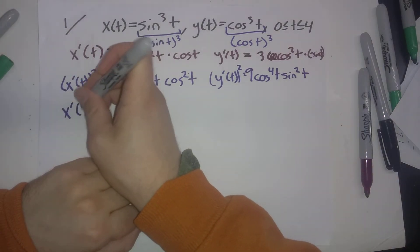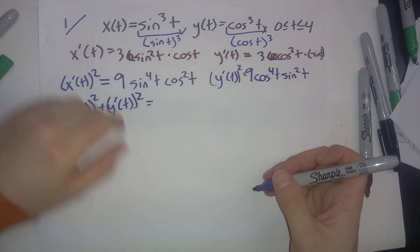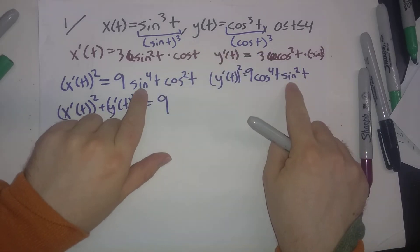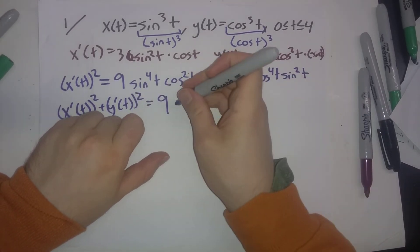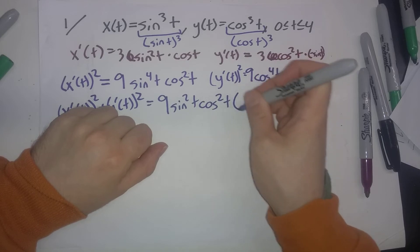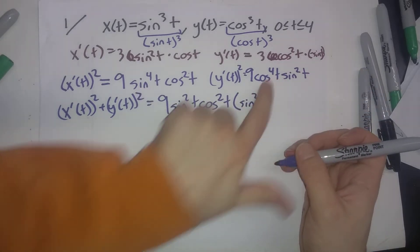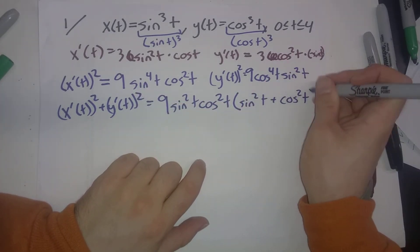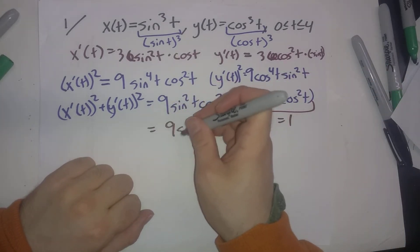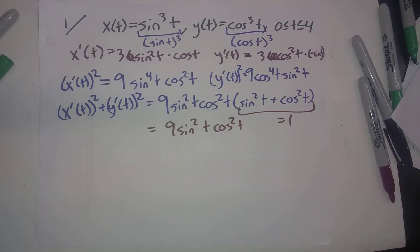When we add these two together, what do we end up with? There's a common factor of 9, a common factor of sin²t between these, and a common factor of cos²t between these. What's left over? We have a factor of sin²t here and a factor of cos²t here, which of course is just 1. So it's just 9sin²t cos²t.